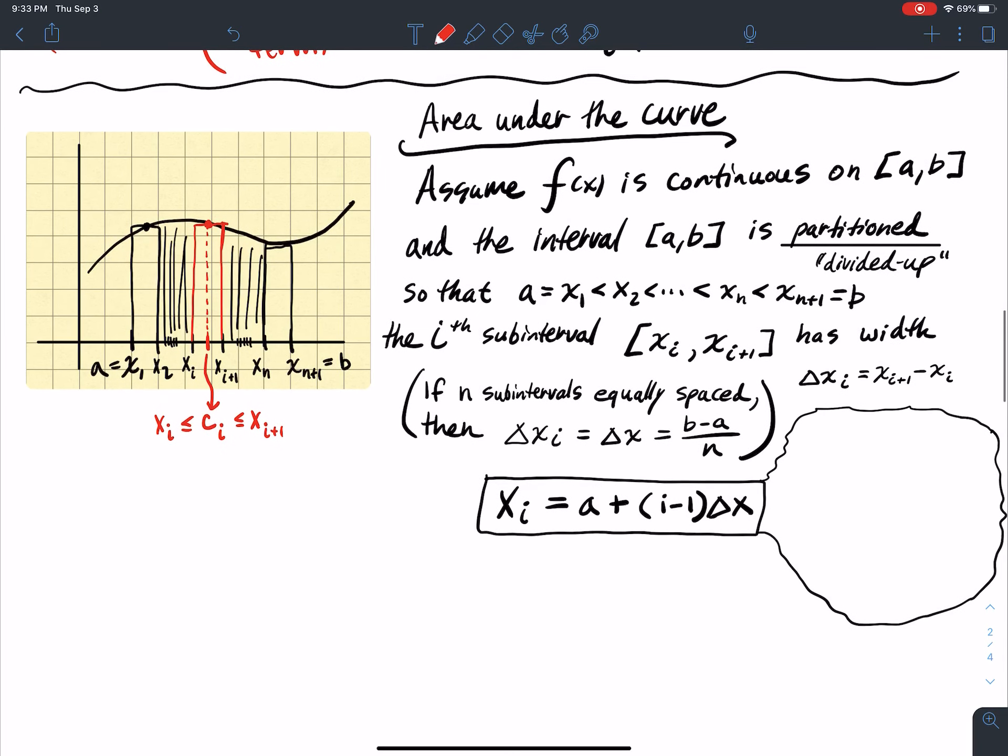So using this formula in action here for x₁, if I plug a 1 into my formula, I have a plus 1 minus 1 delta x, because I plugged in a 1 for the i. But 1 minus 1 is 0, so this term right here just goes away, so I'm just left with x₁ equal to a, which is exactly what I want it to be defined as.